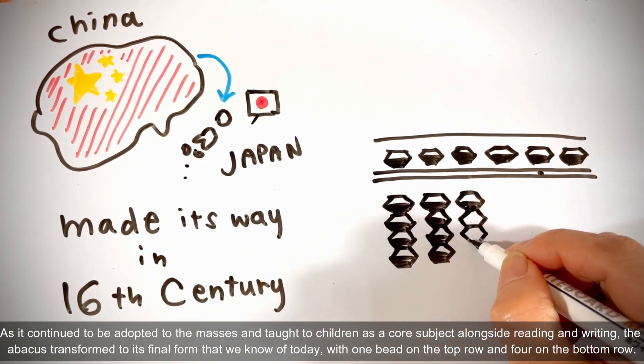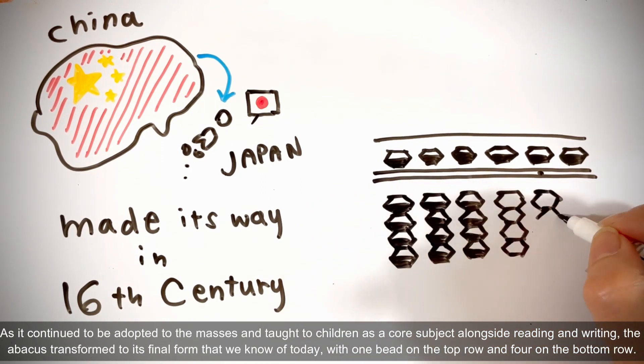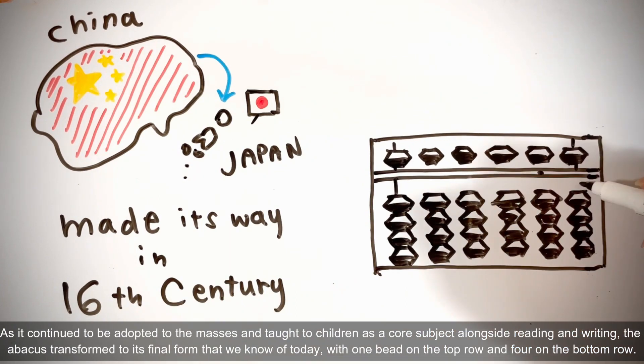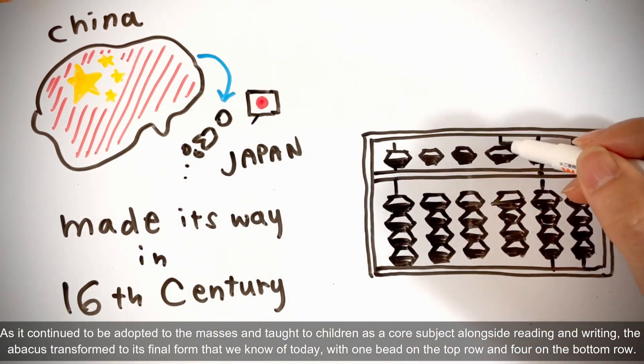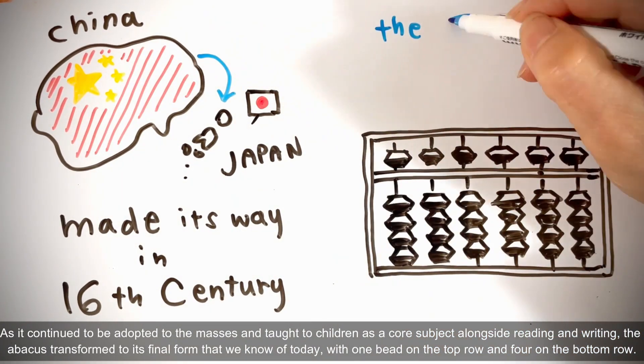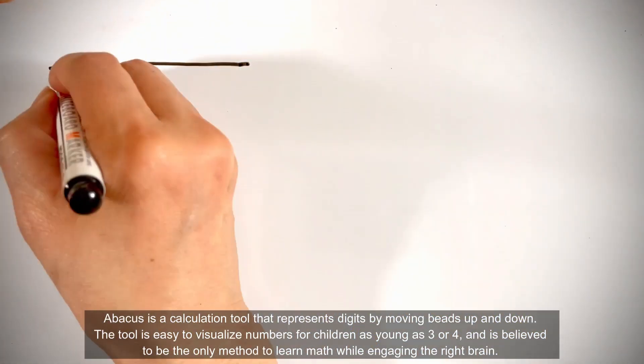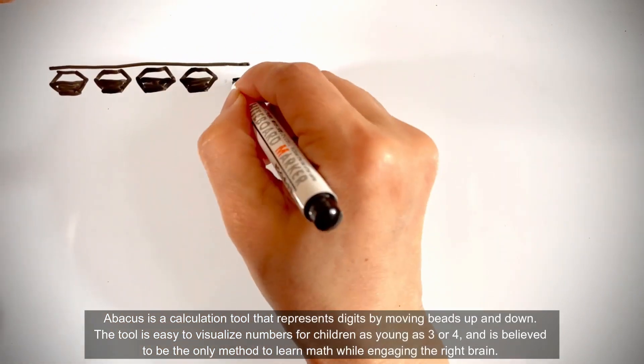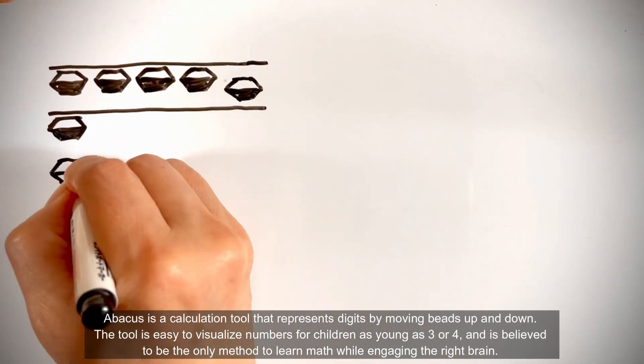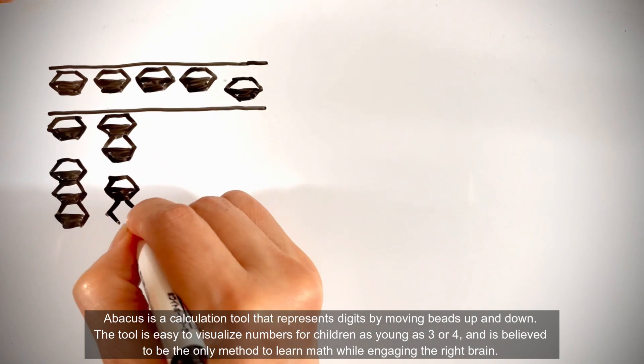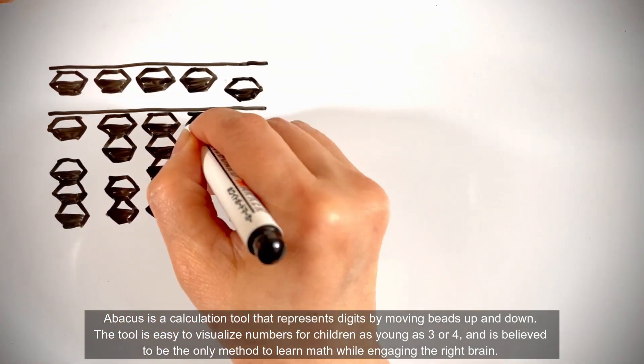With one bead on the top row and four on the bottom row, Abacus is a calculation tool that represents digits by moving beads up and down. The tool is easy to visualize numbers for children as young as three or four, and is believed to be the only method to learn math while engaging the right brain.